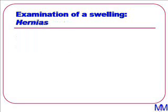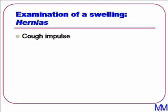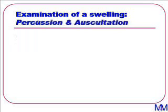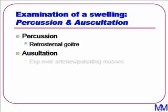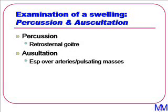Finally, on the topic of special signs on palpation, we need to consider hernias: does the mass have a cough impulse, and is it reducible? At last we've reached percussion and auscultation. These don't matter as much in examination of a swelling, but it is very important not to forget to percuss for a retrosternal goitre, and also to auscultate, especially over arteries and pulsating masses.